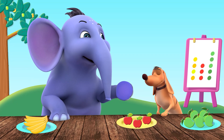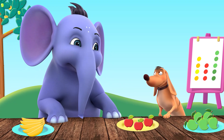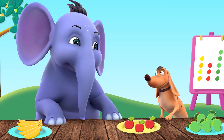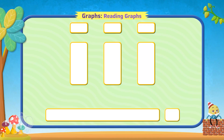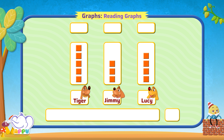Let's do one example of graphs with bones. The picture graph is about the number of bones each of them have. It has many squares and each square represents four bones.